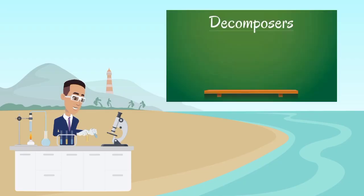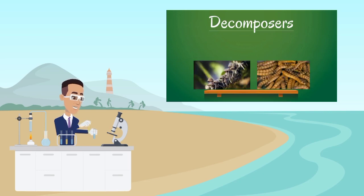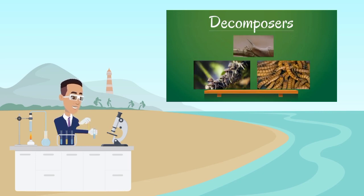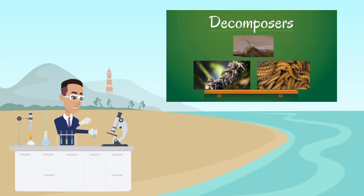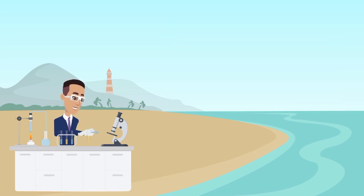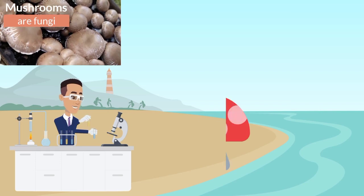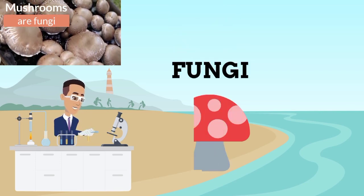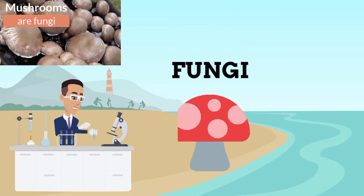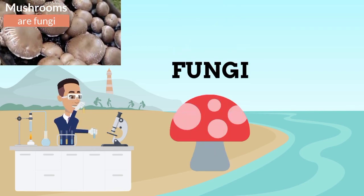Decomposers are microorganisms that feed on dead and waste organic matter, causing them to break down. Decomposers help to recycle compounds from dead matter. Without them, the nutrients would be lost in the ecosystem. In an ecosystem, you may find decomposers such as fungi and bacteria.